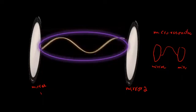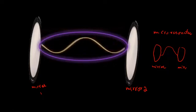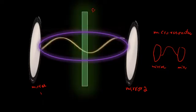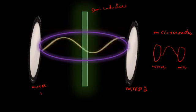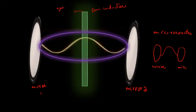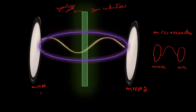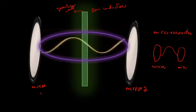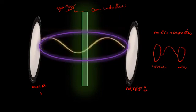To make polaritons, we need to insert something between the mirrors — for example, a semiconductor. We can also call it a quantum well. When we place this quantum well — a sheet of semiconductor only a few tens of atoms thick — in between the mirrors, we have the key ingredient.